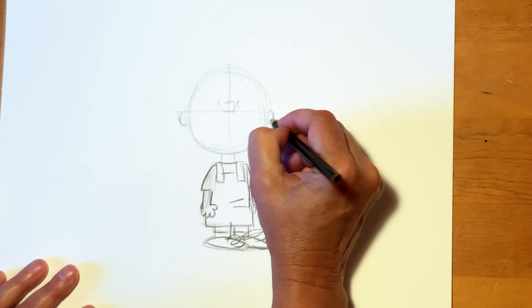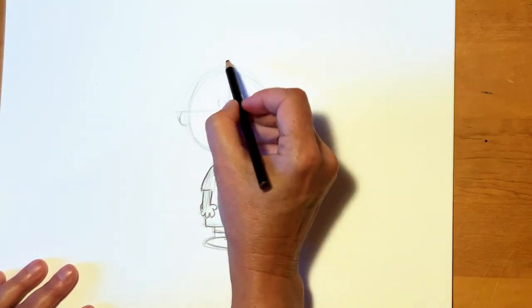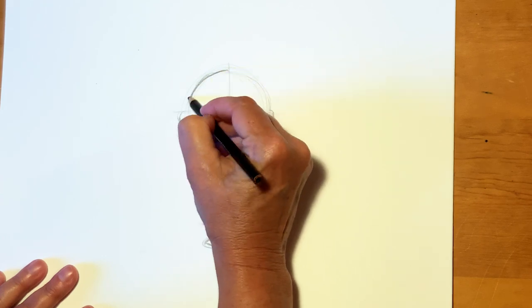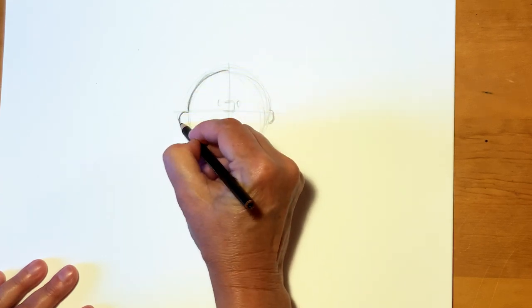One of the funny things about Pigpen is his hair. He has really crazy hair. So, I'm going to darken the shape of his head.